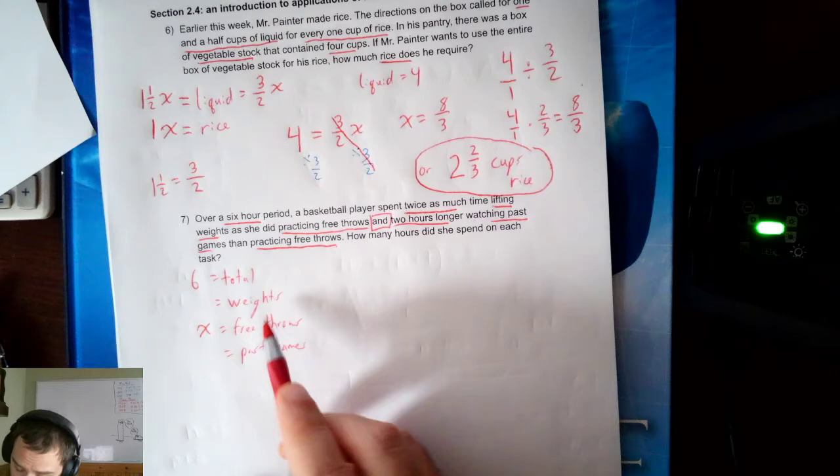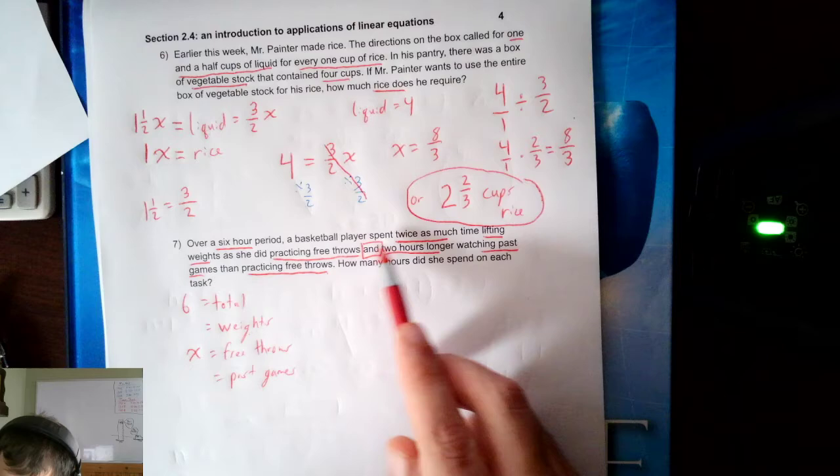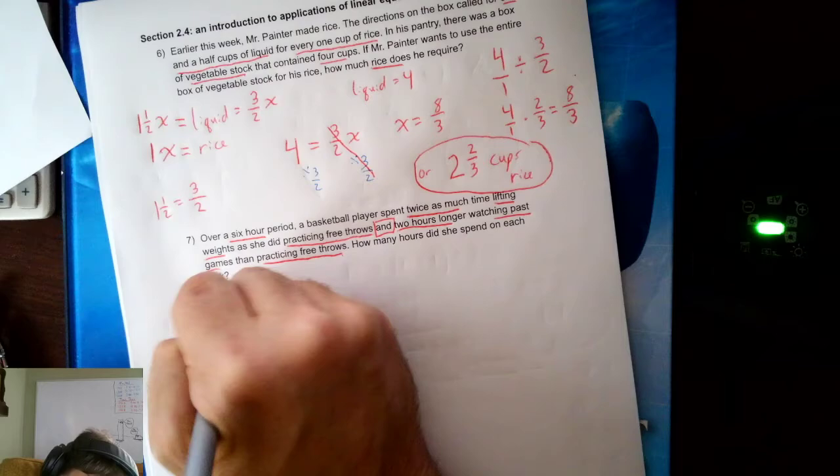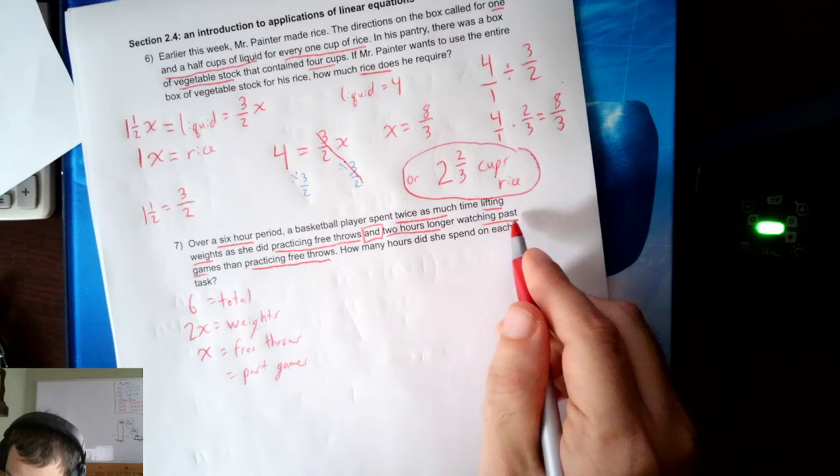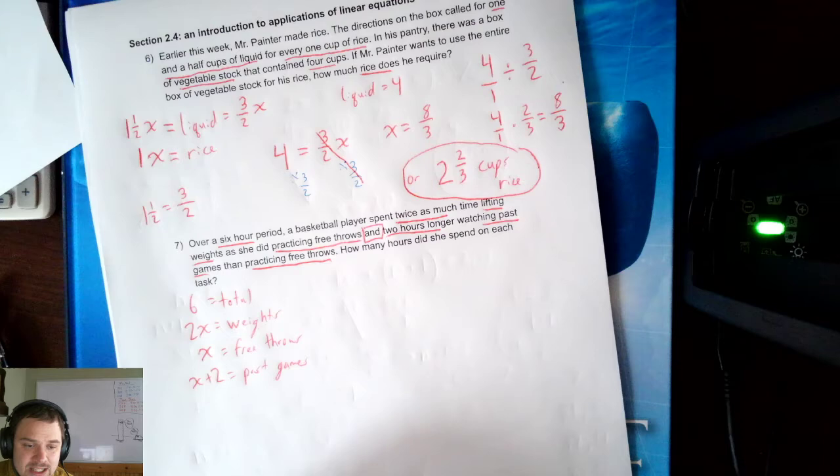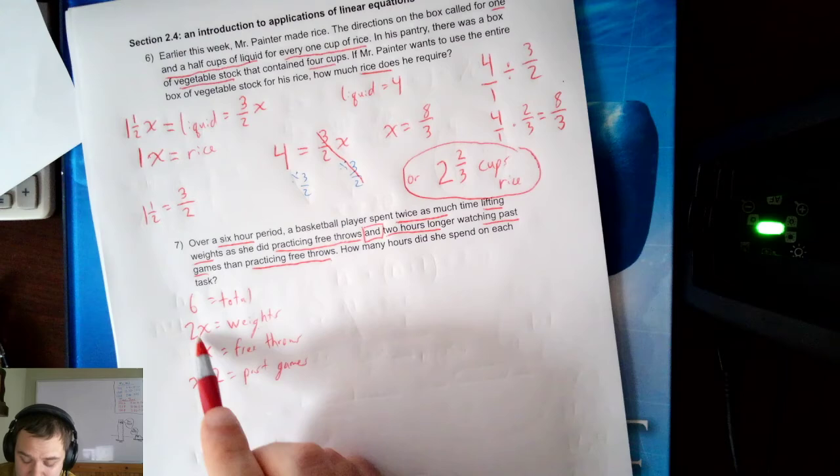Now, I need to represent weights and games in terms of X. Twice as much time lifting as doing free throws. Twice as much. 2X. And then, 2 hours longer on past games than free throws. 2 hours longer would be X plus 2. If I want to go 2 hours longer, I need to add 2. So I have twice as long and 2 hours longer for my other two activities.